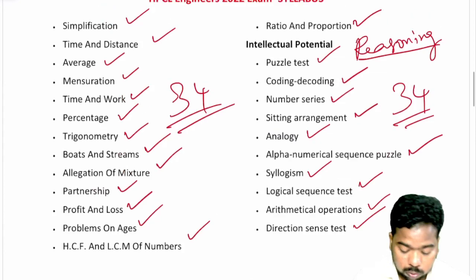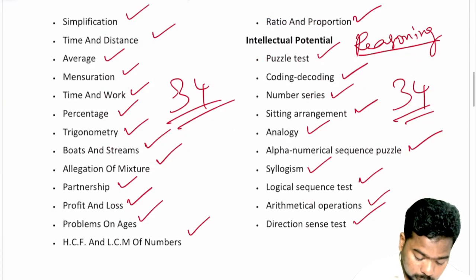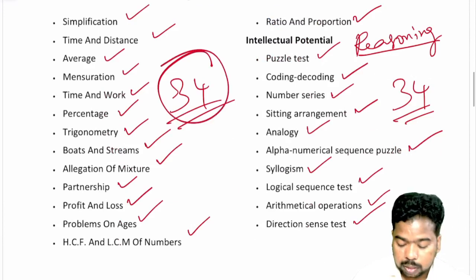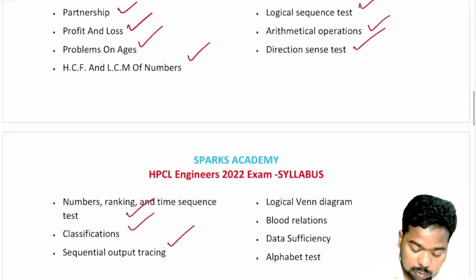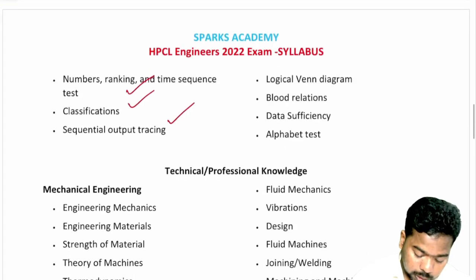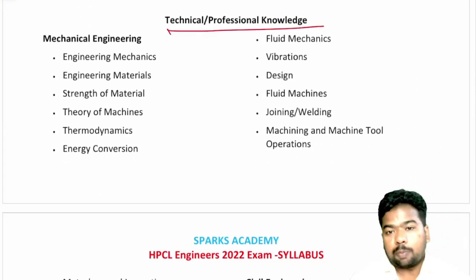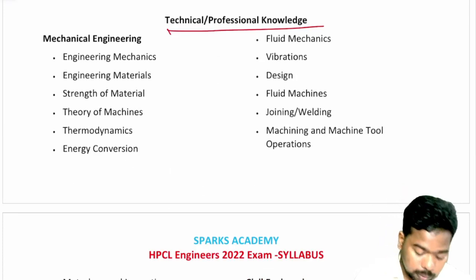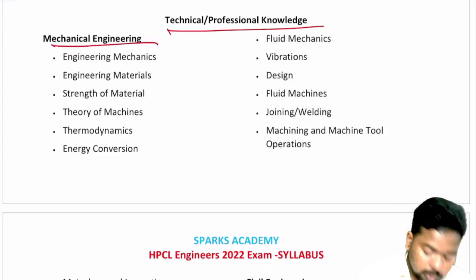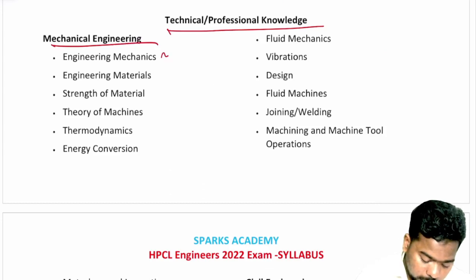Part 1 totals 85 questions, covering English, aptitude (14 questions), and reasoning (14 questions). Part 2 is Technical or Professional Knowledge. If you have an engineering background, you can attempt Part 2.